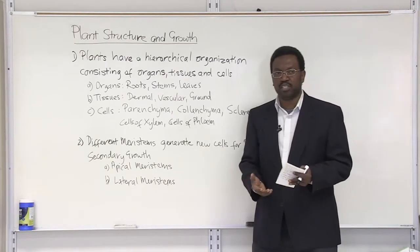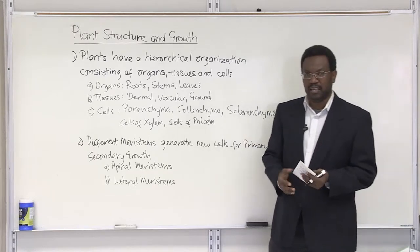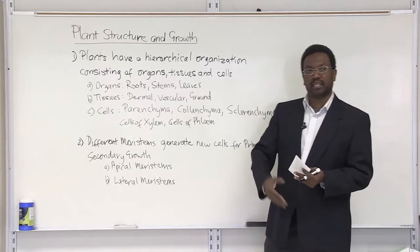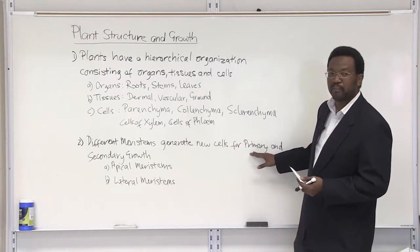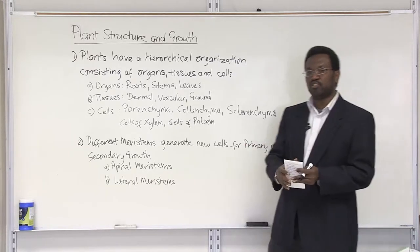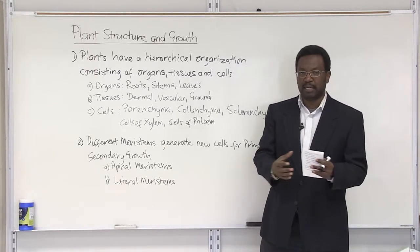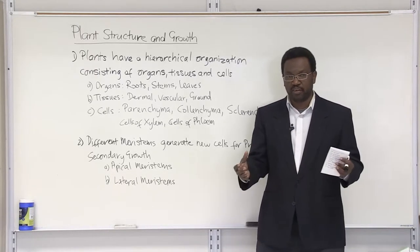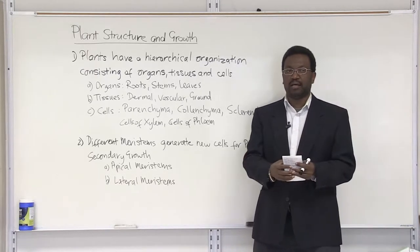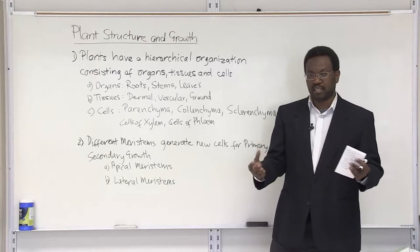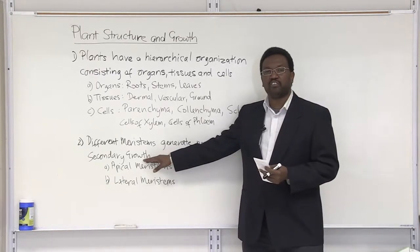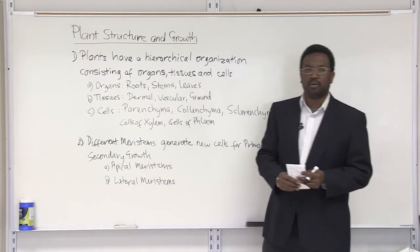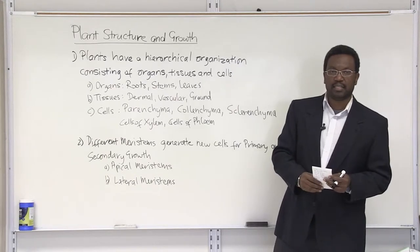Plants grow in two ways. They grow vertically — they grow taller — and that is referred to as primary growth. They also grow wider; the stem gets thicker, increasing in width, and that's secondary growth. We will discuss that today as well.